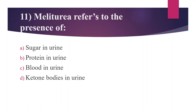Eleventh Question: Melituria refers to the presence of. Option A: Sugar in urine. Option B: Protein in urine. Option C: Blood in urine. Option D: Ketone bodies in urine. Answer is Option A, Sugar in urine, seen in diabetes mellitus — also called glycosuria. Protein in urine is known as proteinuria or albuminuria, common in kidney disease. Blood in urine is hematuria, seen in kidney or bladder cancer and inflammation. High ketone bodies in urine indicate an acidic condition.